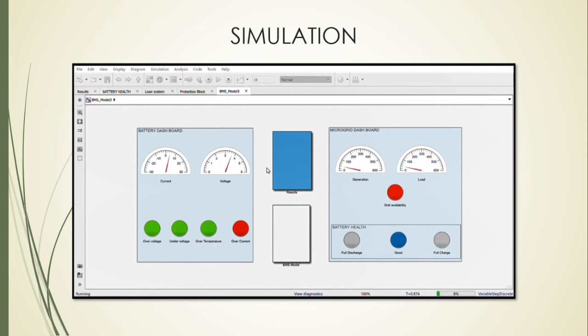Here we vary the load and generation and also the grid availability status from time to time. We can see that while charging and discharging, the battery is isolated when an over-current situation takes place.